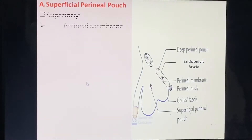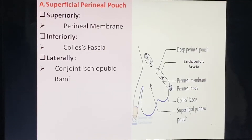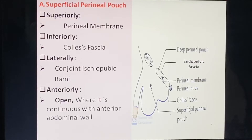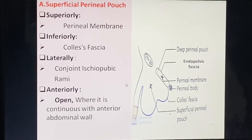The superficial perineal pouch: superiorly bounded by the perineal membrane, inferiorly by Colles' fascia, laterally by the conjoint ischiopubic rami, and anteriorly it is open, continuing with the anterior abdominal wall. This open anterior communication is key to understanding the clinical case.